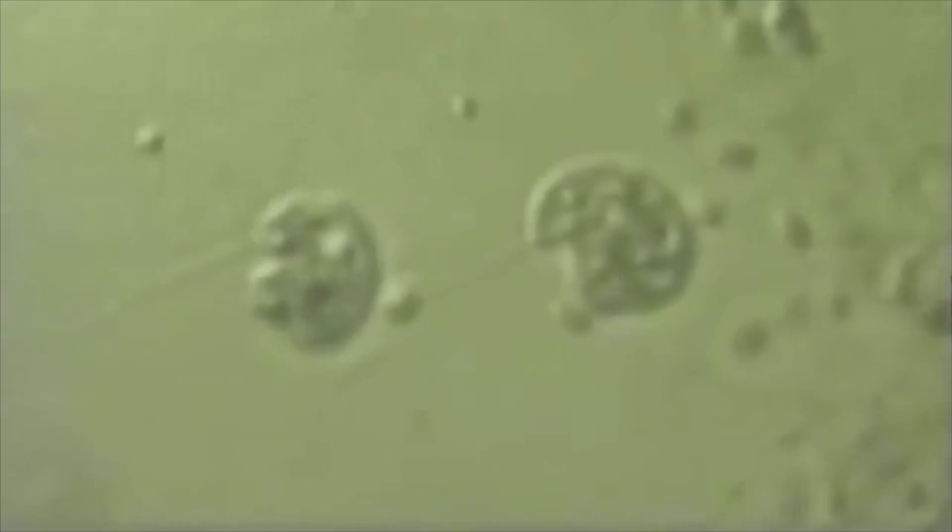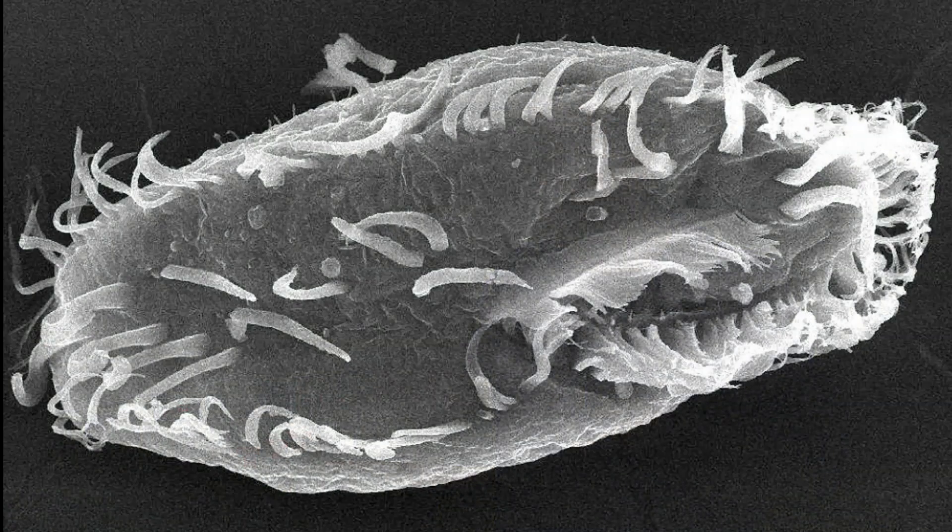So one way, for example, a bacterium could do it, for example an E. coli bacterium, is that it's got a little whip-like tail on the back. And it rotates that round just like a corkscrew. And that motion, you can tell it's not time symmetrical. There are other tricks as well. I mean the bacteria can use little cilia, little hairs that move along the edge of its body and that can propel it through the liquid.